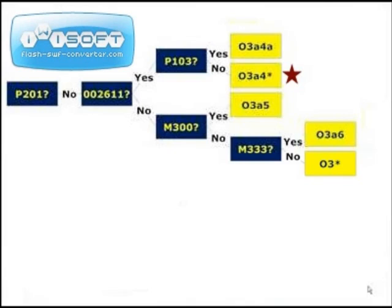If you did not have the mutation identified by 002611, but were positive for M300, you are in O3A5. If you are positive for M333, you are in subclade O3A6. If you did not have any additional SNPs, you are in O3 star.